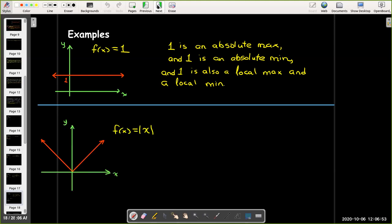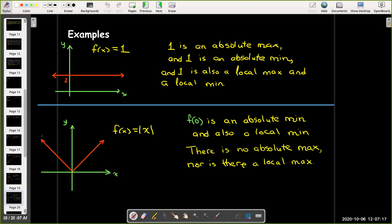Let's take a look at f(x) equals absolute value of x. From looking at this, we can see that we definitely have a low point. So f(0) is an absolute min, and it's also a local min. There are numbers to the left and to the right of it. But there is no absolute max because the function continues to grow without bound, and there's actually no local max either.